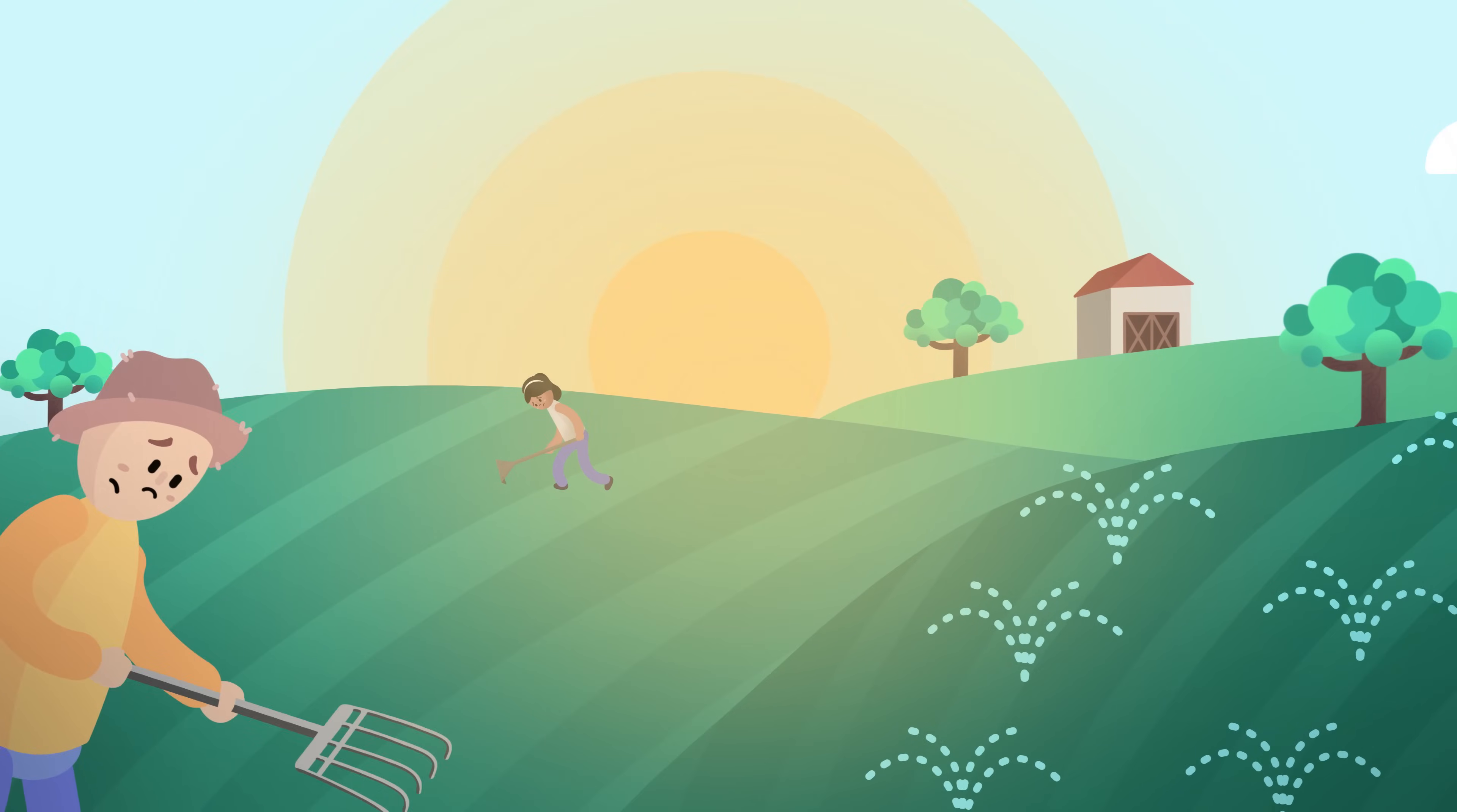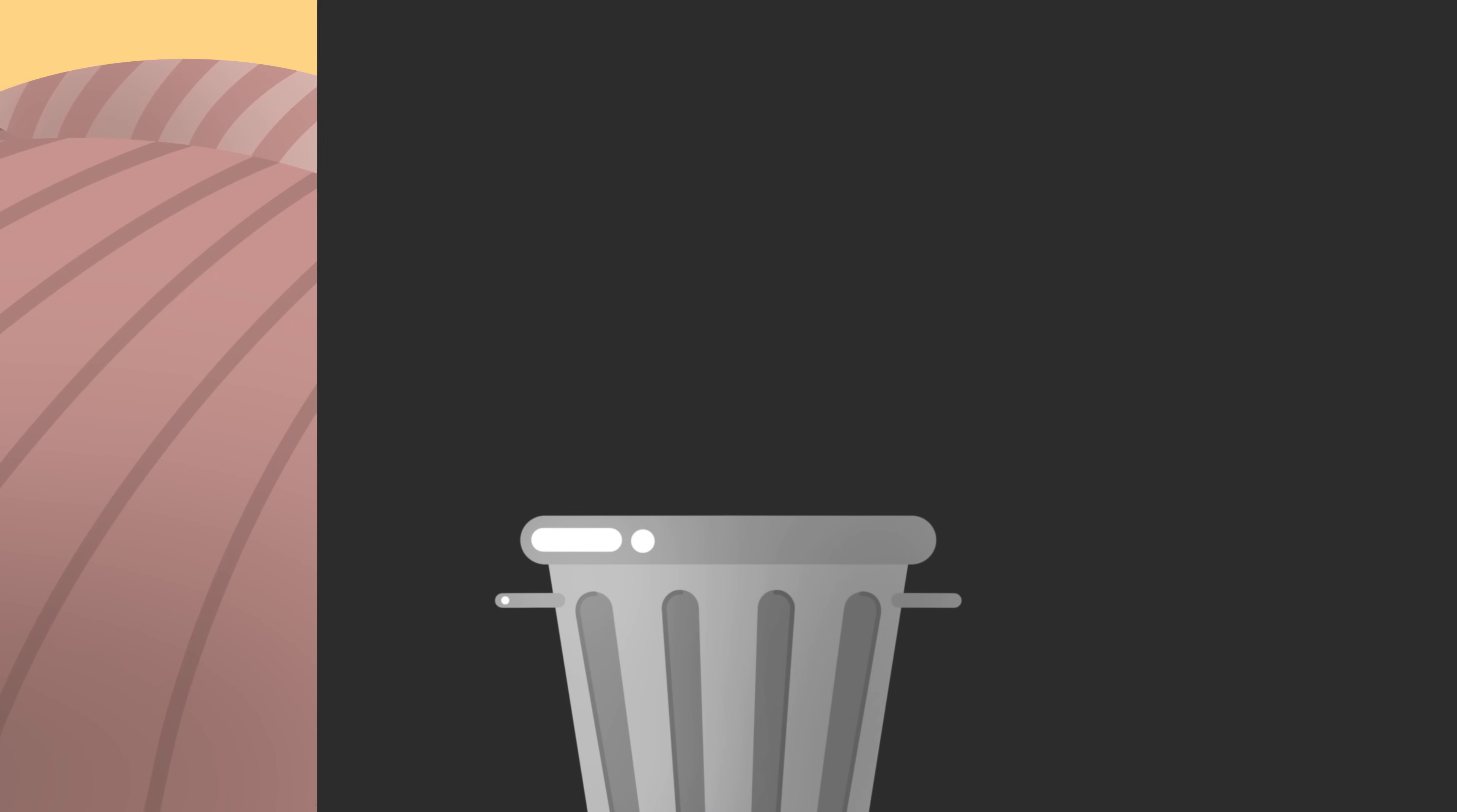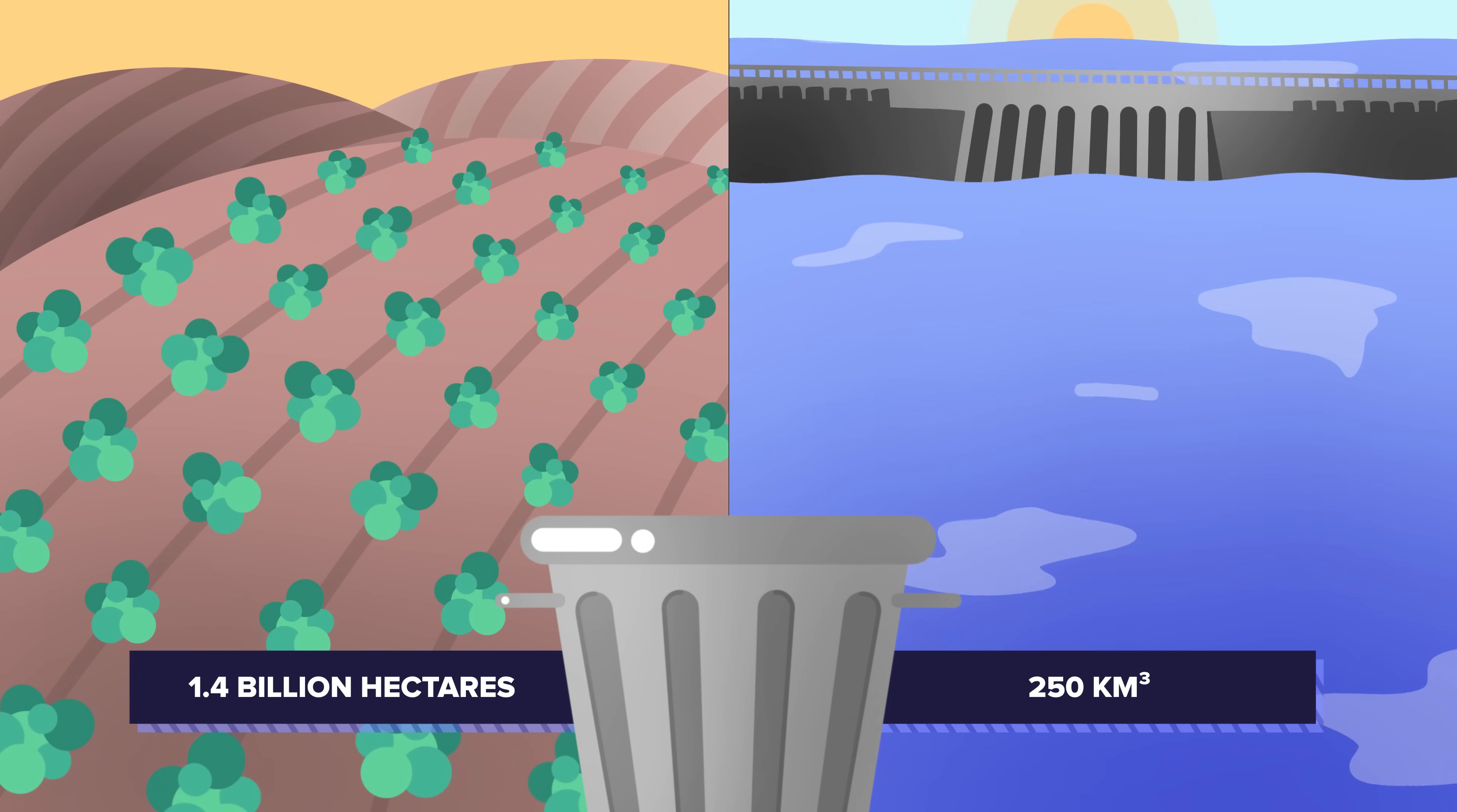When food is lost or wasted, all of the resources that went into making it are wasted too. Globally, this accounts for 1.4 billion hectares of wasted land and 250 kilometers cubed of wasted water every year.